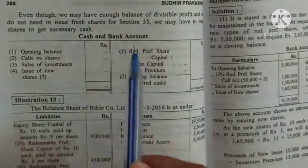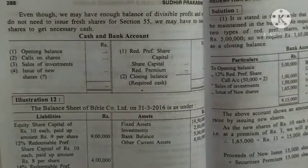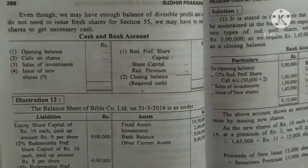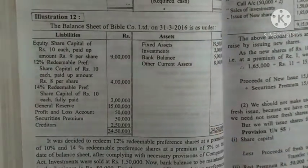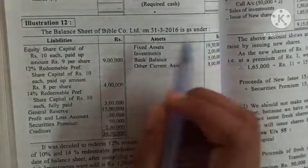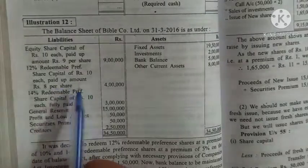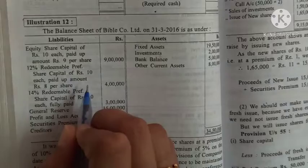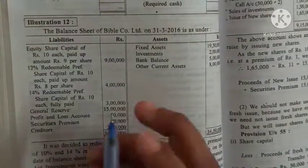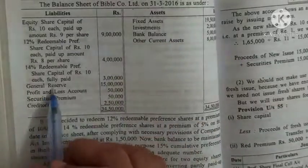We will find the cash and bank balance when a condition is given that a minimum cash balance must be maintained. At that time, from the cash and bank account, you can easily find the issue of new shares. To understand easily, we start with Illustration 12. The balance sheet of the Bible Company Limited as on 31st March 2016 is as under: equity share capital is given, 12% redeemable preference shares of rupees 10 each paid up to 8 rupees — so it's partly paid up with 2 rupees per call still unpaid — then 14% redeemable preference share capital of rupees 10 each fully paid. So there are two types of redeemable preference shares.